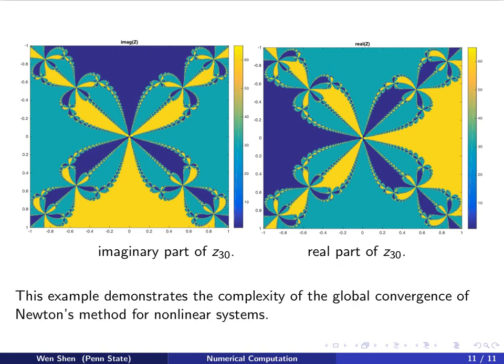So it's fair to conclude that this example demonstrates the complexity of the global convergence of Newton's method for nonlinear systems. We have the observation that the iteration must not always converge to the root that is closest to the initial guess. The basin of attraction of the root displays an extremely complex structure. In fact, they are called fractals. You can zoom in to a specific region to see that it again demonstrates the same pattern.